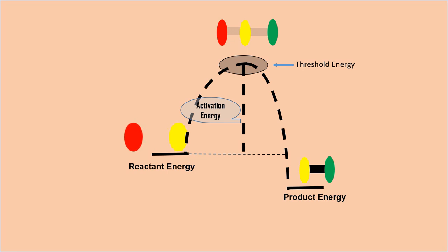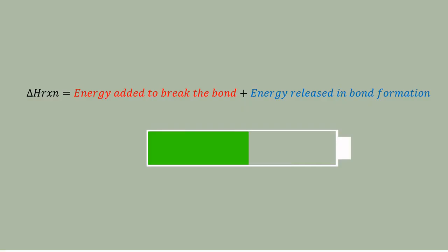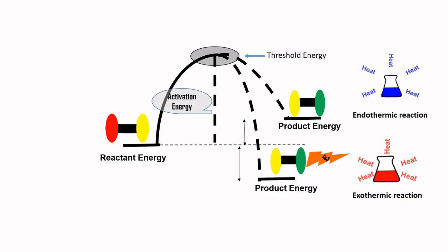This is known as threshold energy or energy barrier. Unless the provided energy reaches the threshold energy, the reaction won't proceed. So enthalpy of the reaction is the amount of energy required to break the bonds plus the amount of energy released by the system.